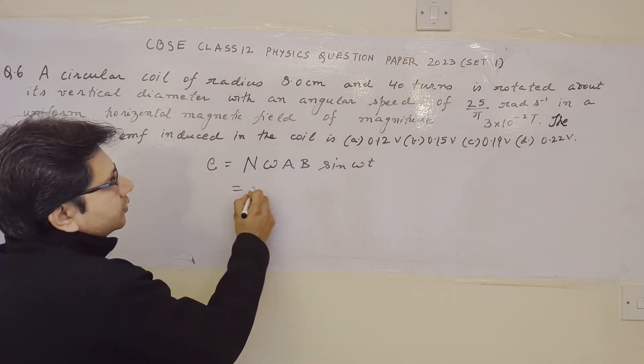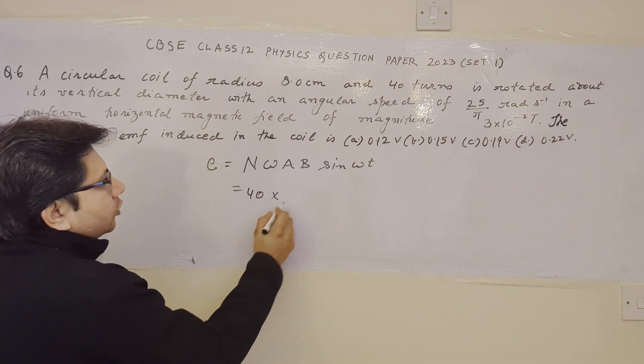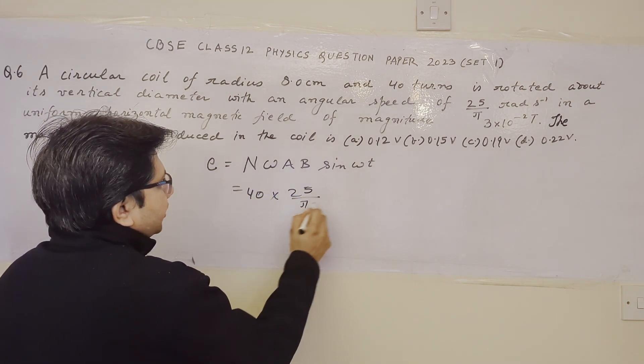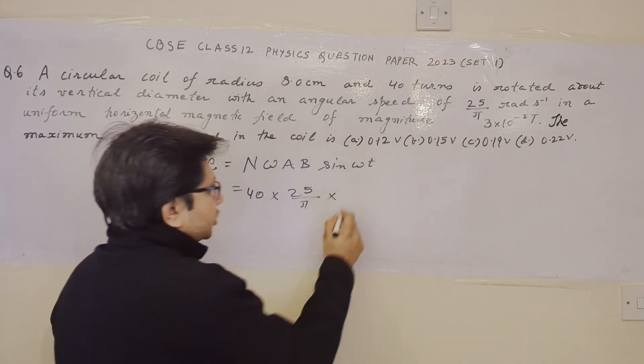The number of turns given is 40. Omega, the angular speed is given as 25 upon pi. Area is basically, it is a circular coil, so the area is pi r square.